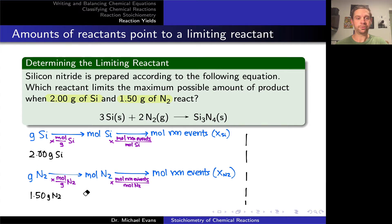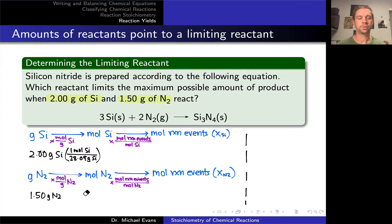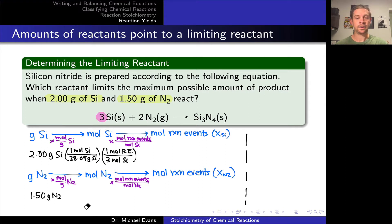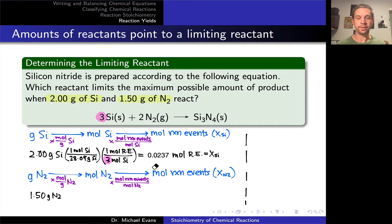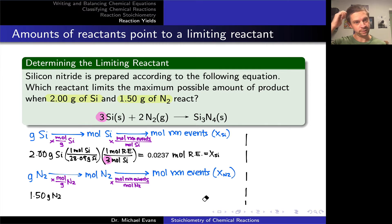Starting with 2 grams of silicon, the molar mass of silicon is 28.09 grams per mole, so we multiply by 1 mole of silicon per 28.09 grams. The mole ratio from the balanced equation shows that 3 moles of silicon are consumed per mole of reaction events, giving us 1 mole of reaction events per 3 moles of silicon. Calculating this out, we get 0.0237 moles of reaction events — we call this X_Si, the number of reaction events the silicon can do.